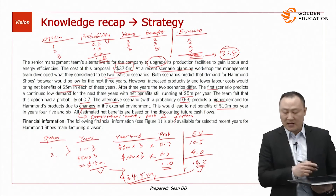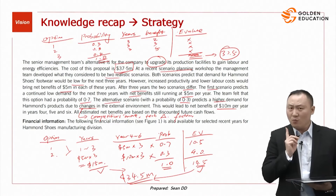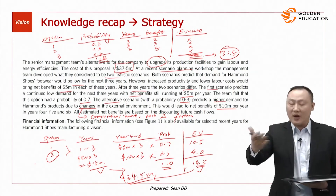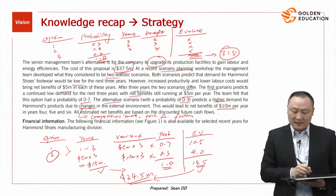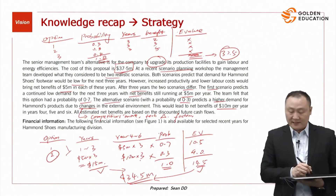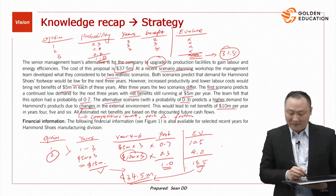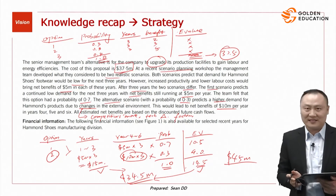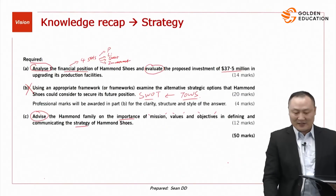However, the $34.5 million figure could change. What if the second scenario fully realizes — no first scenario at all? Then: $10 million × 3 = $30 million, plus $15 million from years 1–3, equals $45 million total. If it reaches $45 million, that would be higher than the original investment of $37.5 million. So this is the basic analysis of requirement A — simple in terms of calculation.